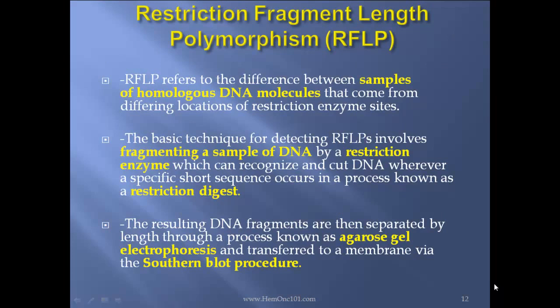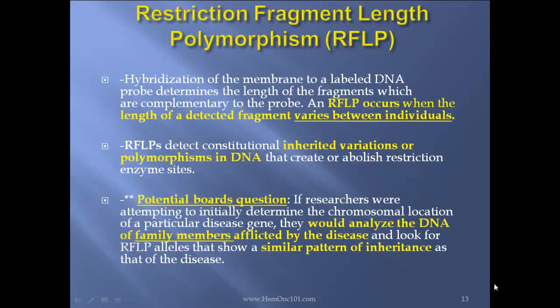What is RFLP? RFLP refers to differences between samples of homologous DNA molecules that come from different locations of restriction enzyme sites. The basic technique for detecting RFLPs involves fragmenting a sample of DNA by restriction enzyme, which can recognize and cut DNA wherever a specific short sequence occurs — a process known as restriction digest. The resulting DNA fragments are then separated by length through a process known as agarose gel electrophoresis and transferred to a membrane via Southern blot procedure. DNA that creates or abolishes restriction enzyme sites is identified.